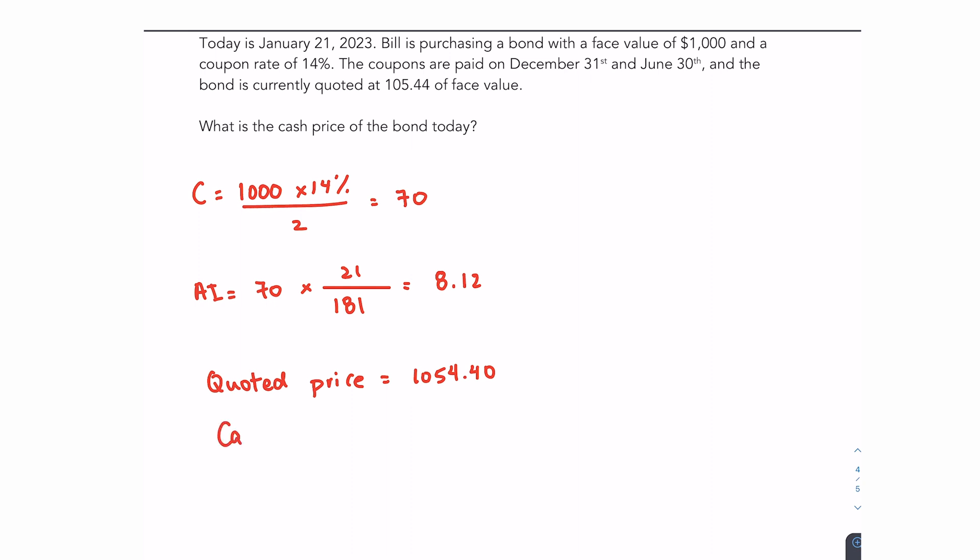And finally, the cash price would be the sum of the two things we just found. So $1,054.40 plus $8.12. So the answer is $1,062.52. That would be the cash price. That would be how much Bob or Bill, excuse me, would have to pay to buy this bond today.